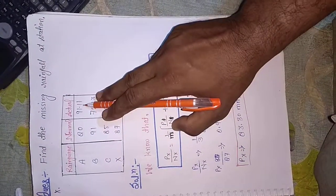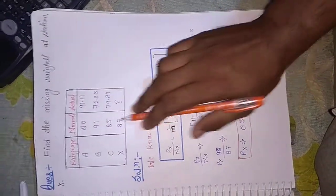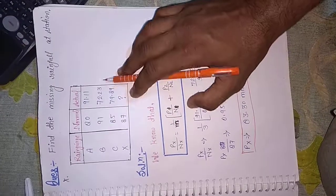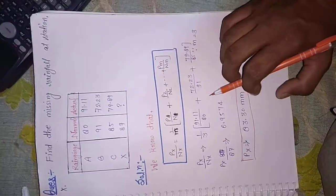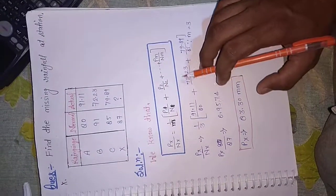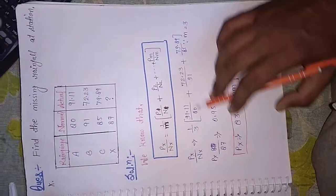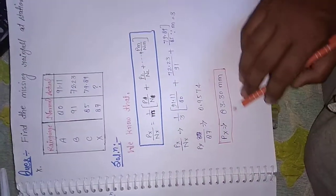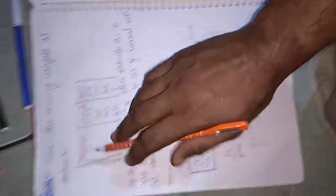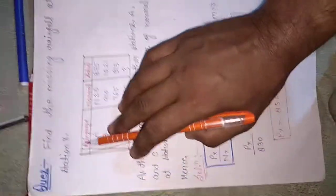P1 यहाँ 91 actual है और N means normal है। तो 91/80 plus 72/91 plus 79.89/85 — जब इसको solve करेंगे तो Px is equal to 83.30 mm निकलेगा।